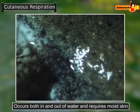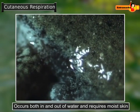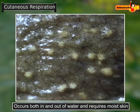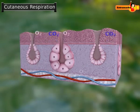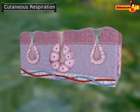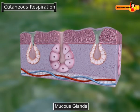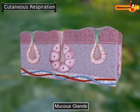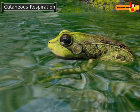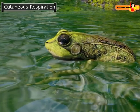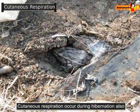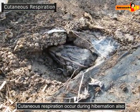Oxygen gas diffuses in and carbon dioxide diffuses out of the body. This mode of respiration occurs both in water and on land and requires moist skin. Thus frogs always have moist skin due to glands which produce mucus across the skin. It accounts for more than half of the respiration in adult frogs. During hibernation, this is the only mode of respiration.